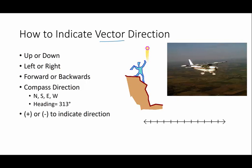When you have a vector, you have to indicate the direction that it's traveling, because a vector is a number with direction. So how do you indicate direction? Sometimes it's simple. It could be as simple as saying an object's going up or down. Sometimes it is good enough to describe an object as moving to the left or to the right, or maybe forward or backwards.